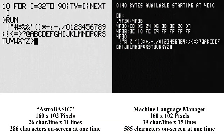You may have noticed while staring at the Machine Language Manager screen that it has a smaller font. Here I've made a comparison between the Bally Arcade running AstroBasic and also running the Machine Language Manager. The AstroBasic screen resolution is 160 by 102 pixels, managing 26 characters and 11 lines of text — 286 characters on screen at once. In comparison, the MLM has 39 characters per line and 15 lines of text, for a total of 585 characters on screen — quite useful for machine language programming.